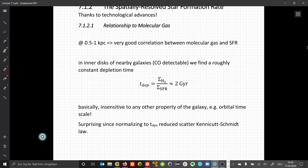When we look at the relationship to the molecular gas, at a scale of 0.5 to 1 kiloparsec, we find a very good correlation between the molecular gas and the star formation rate. In the inner disks of nearby galaxies, where we find CO emission, there we find a roughly constant depletion time for all galaxies in the order of 2 gigayears.